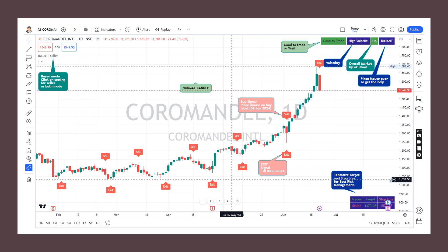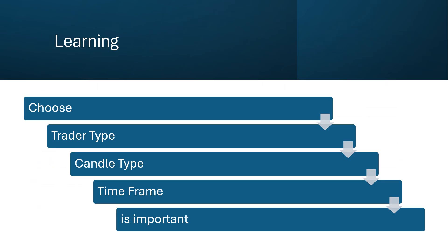This particular Bullend indicator, if you use it wisely and properly, I think you can make good profitability and increase your net worth. So what is the learning? Choose a proper trader type — buyer, seller, or both. Choose a proper candle type — Heikin-Ashi or normal. And choose a proper time frame: 15 minutes if you are an intraday trader, or one day, one week, or one month if you are a positional trader. These settings are very important to understand this indicator and get the best results out of it.